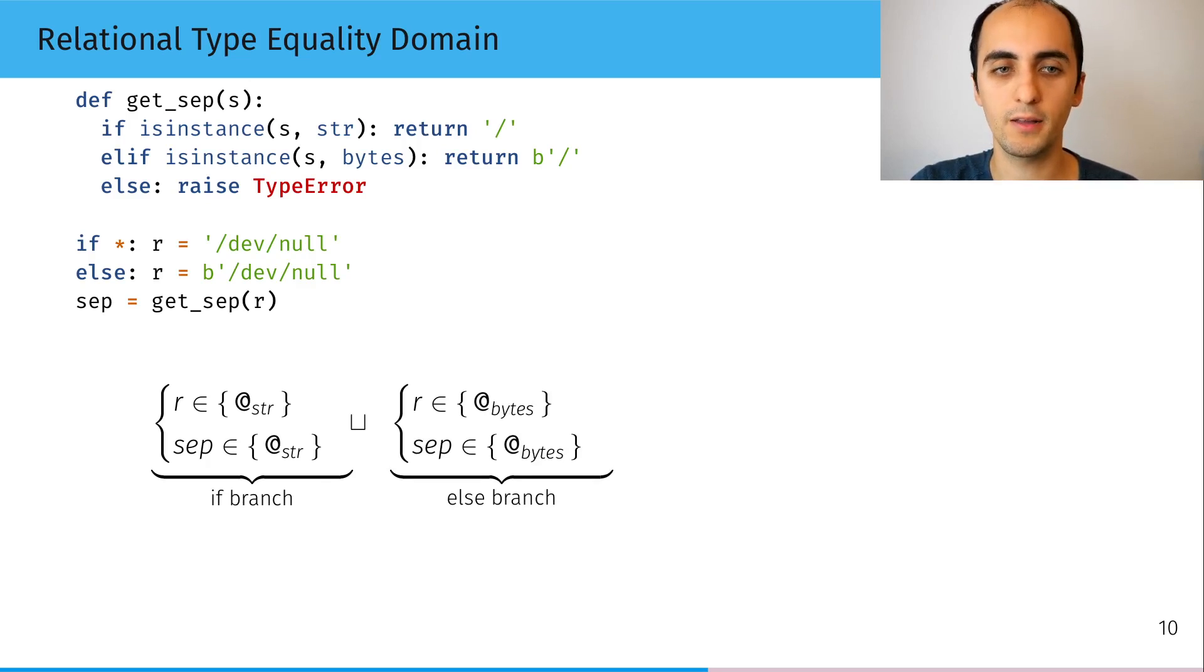which is either a string or bytes, we lose the relationship that when r is a string, then sep is a string. And the goal of the relational type equality domain is to bring back that information.